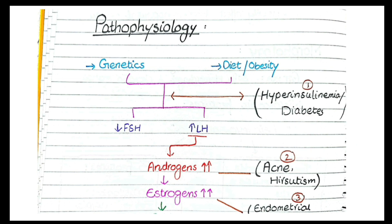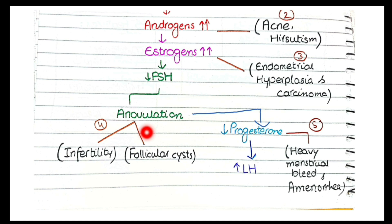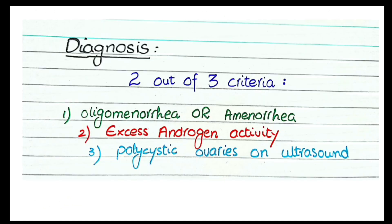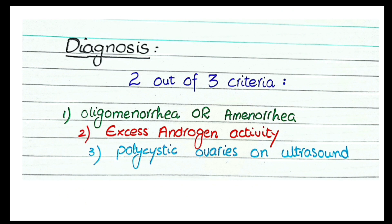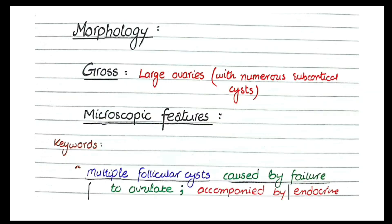For diagnosis of polycystic ovarian syndrome, there is a three-point criteria, and if two out of three points are fulfilled, we label it as polycystic ovarian syndrome. The three criteria are: (1) oligomenorrhea or amenorrhea, (2) excess androgen activity — proven by biochemical tests or clinical signs such as acne or hirsutism, and (3) polycystic ovaries on ultrasound. If two of these three are present, a diagnosis of polycystic ovarian syndrome can be made.